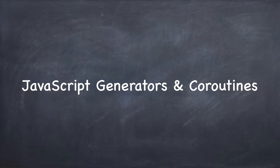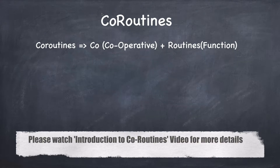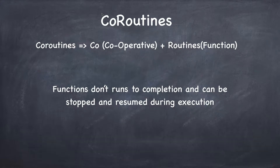Hello, good day, welcome to this JavaScript generators and coroutines tutorial. Let's talk about coroutines. Coroutines are made up of two words: 'co' which means cooperative, and 'routines' which means functions. So coroutines are functions which don't run to completion and can be stopped and resumed during execution. It sounds interesting, so let's see it.